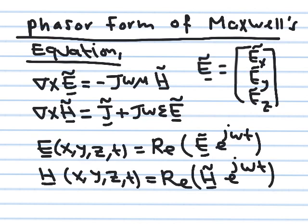The first equation in time domain, curl E = −∂B/∂t, becomes the phasor equation by replacing ∂/∂t with jω. The second equation, curl H = J + ∂D/∂t, similarly has ∂/∂t replaced by jω, and D = εE. After solving in the frequency domain, you recover the time domain quantity by multiplying the phasor by e^(jωt) and taking the real part — just as in circuit phasor analysis.